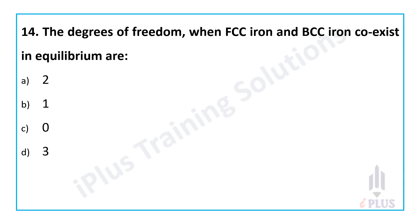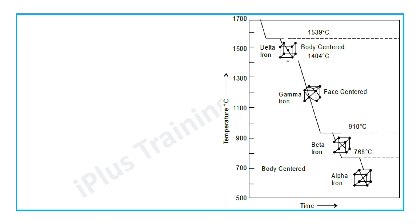Question 14: The degrees of freedom when FCC iron and BCC iron coexist in equilibrium. In the allotropic diagram of iron, FCC and BCC phases coexist at 910 degrees Celsius. Below 910°C, iron is in BCC (beta iron) state, and above it, iron is in the FCC (gamma iron) phase.